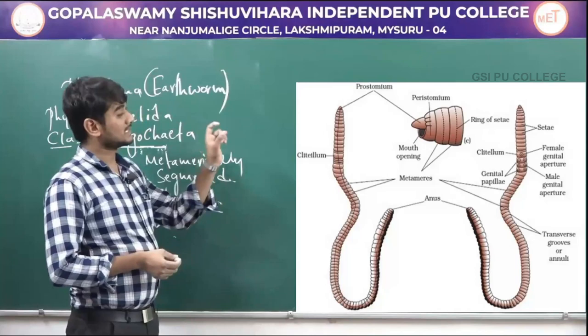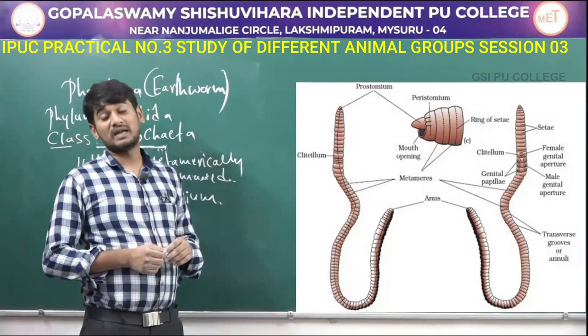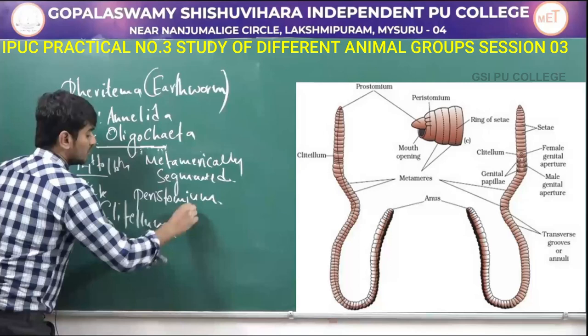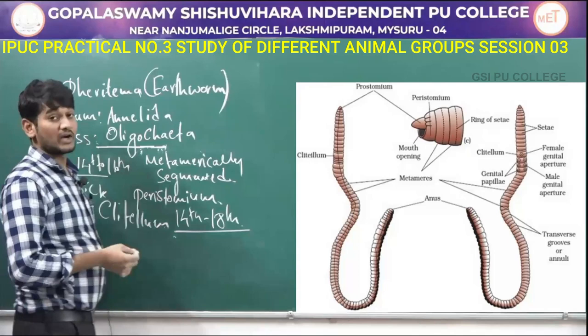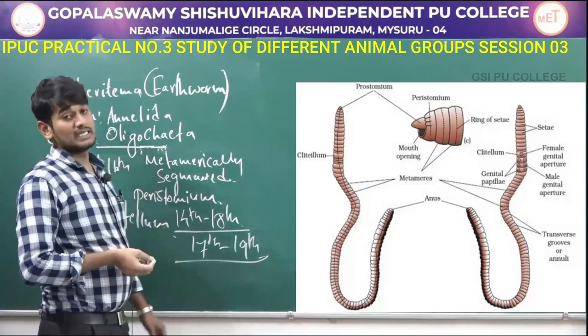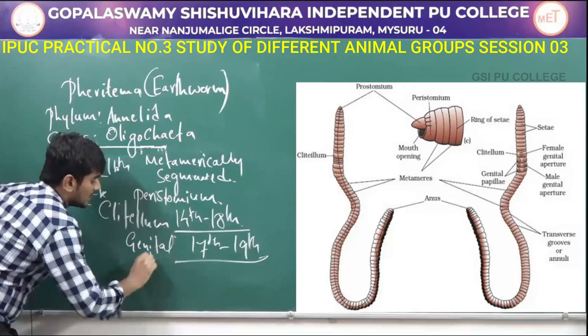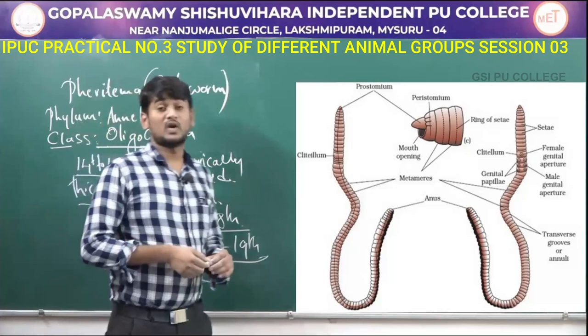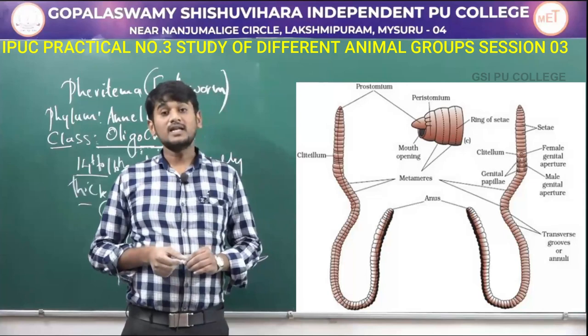Both male and female genital apertures are present in the fourteenth to eighteenth segments, ventrolaterally and midventrally respectively. The seventeenth to nineteenth segments have ventrolateral genital papillae. The spermathecal openings are found ventrolaterally between the grooves of metameres five to six, six to seven, and eight to nine.